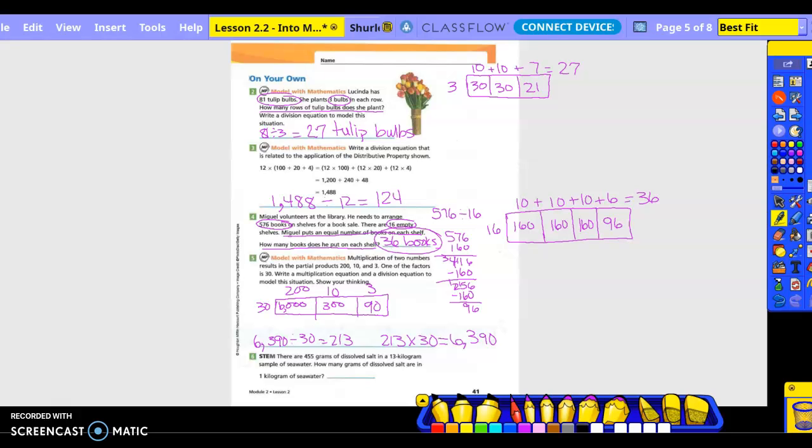Number six: There are 455 grams of dissolved salt in a 13 kilogram sample of seawater. How many grams of dissolved salts are in one kilogram of seawater? So we have 455, 13 kilograms. How many grams are in there? So we're going to have our box.